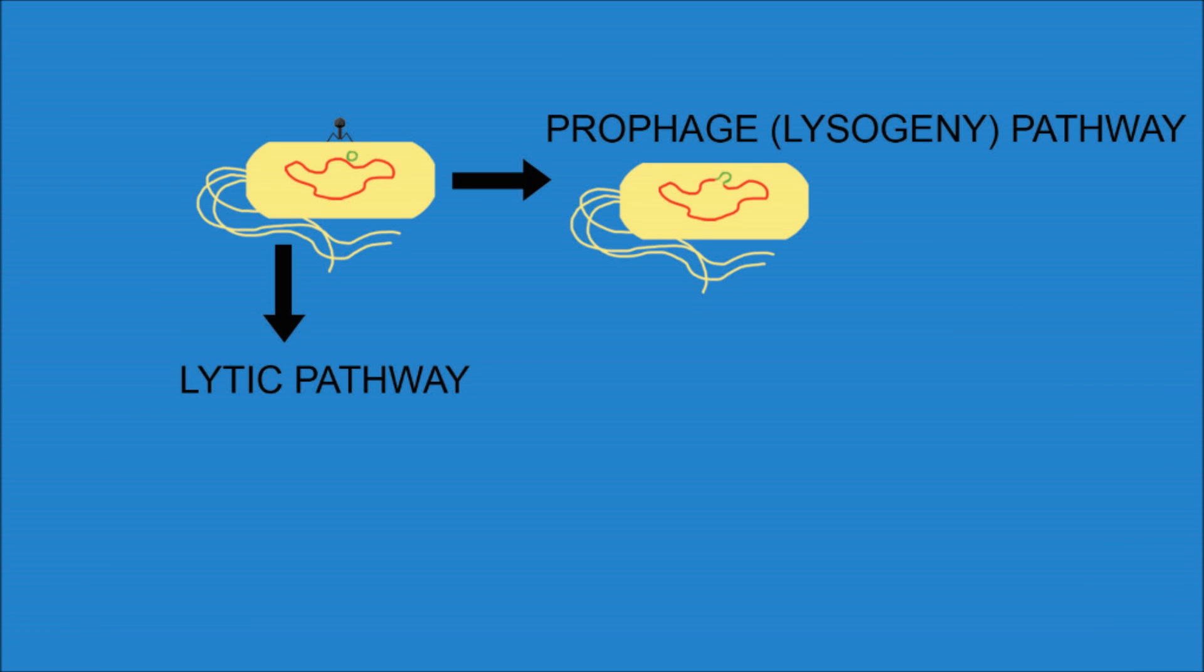In the prophage pathway, the virus's DNA integrates into the host's genome, and at this point is termed a latent prophage. The host unsuspectingly replicates over and over for however many generations, taking the virus's genome with it.